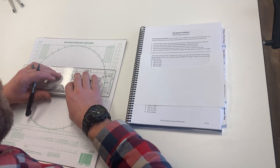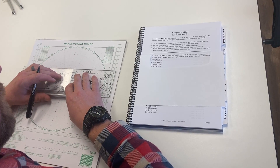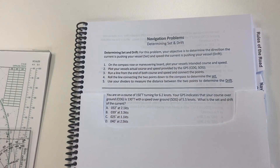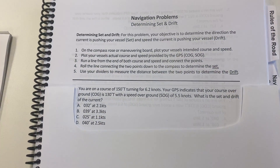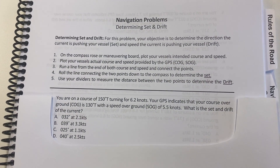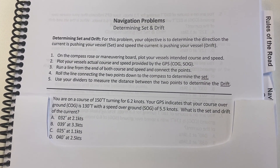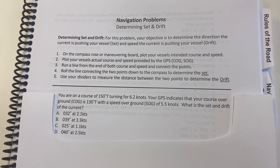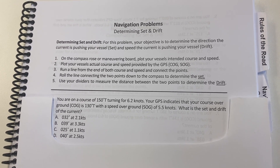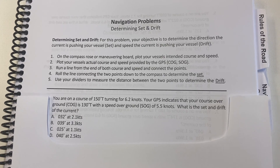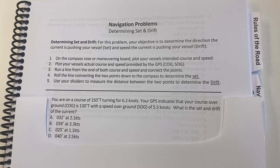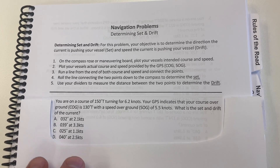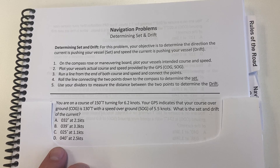We are in the navigation problem section of our workbook, and we're going to be determining our set and our drift. It is the combined effect of both our wind and currents. We're trying to solve for a direction, which is our set, and a speed, which is our drift. You can see our answers here both have a direction and a speed.